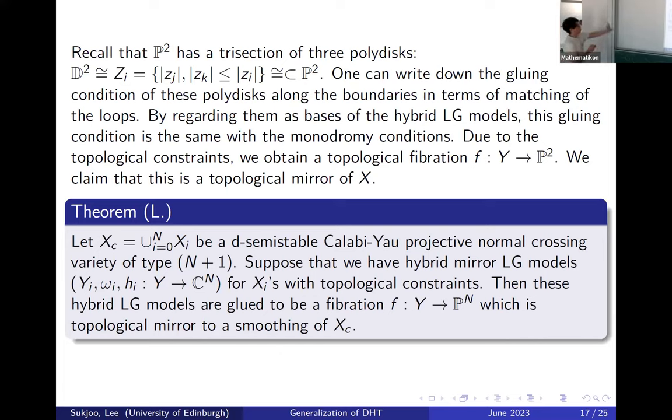The gluing relation of the three discs is basically the same with the toric compactification. It turns out that this model condition that I wrote down here comes from the topological constraints that we obtain from topological fibers. And then the claim is that this gluing gives a topological fibration. You can do this more generally when we have higher type degenerations. What we obtain in the end is a topological fibration.